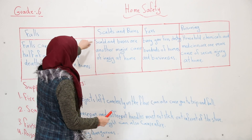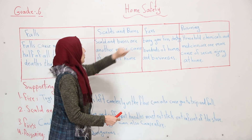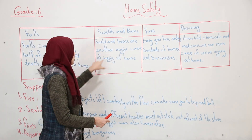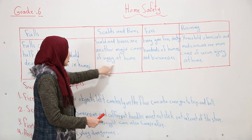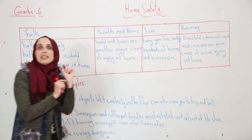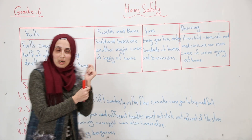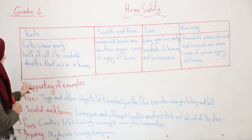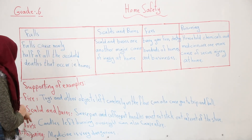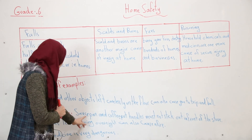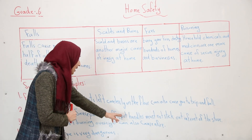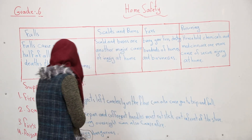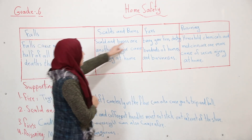The second cause is scalds and burns. Scalds and burns are another major cause of injury at home. For example, saucepan and coffee pot handles must not stick out in front of the stove.